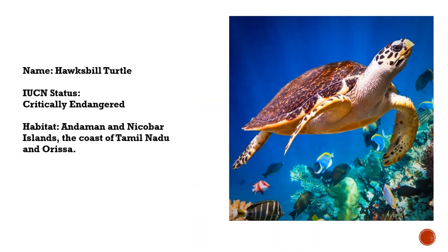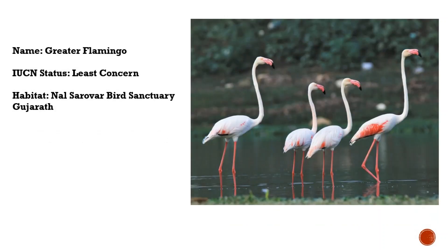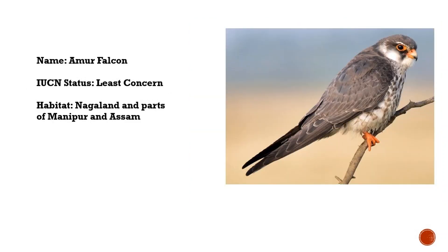The second one is the Hawksbill Turtle, which is also migratory in nature. Nesting occurs in about 70 countries across the world. In India, they are found in the Andaman and Nicobar Islands and the east coast — the coasts of Tamil Nadu and Odisha. Another species is the Greater Flamingo, which is the most widespread and larger species of the flamingo family, and it can be observed at Nal Sarovar Bird Sanctuary in Gujarat.